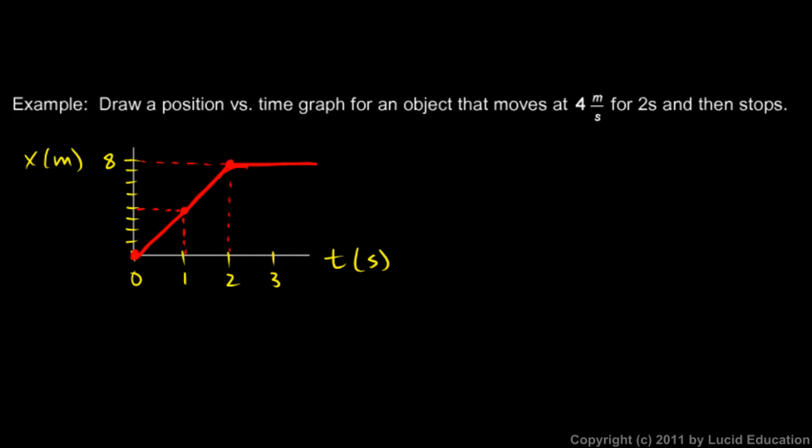So if you want to smooth out the corner there a little bit, that's fine. But this graph is sufficient to answer the question. Draw a graph for an object that moves at 4 meters per second for 2 seconds and then stops.